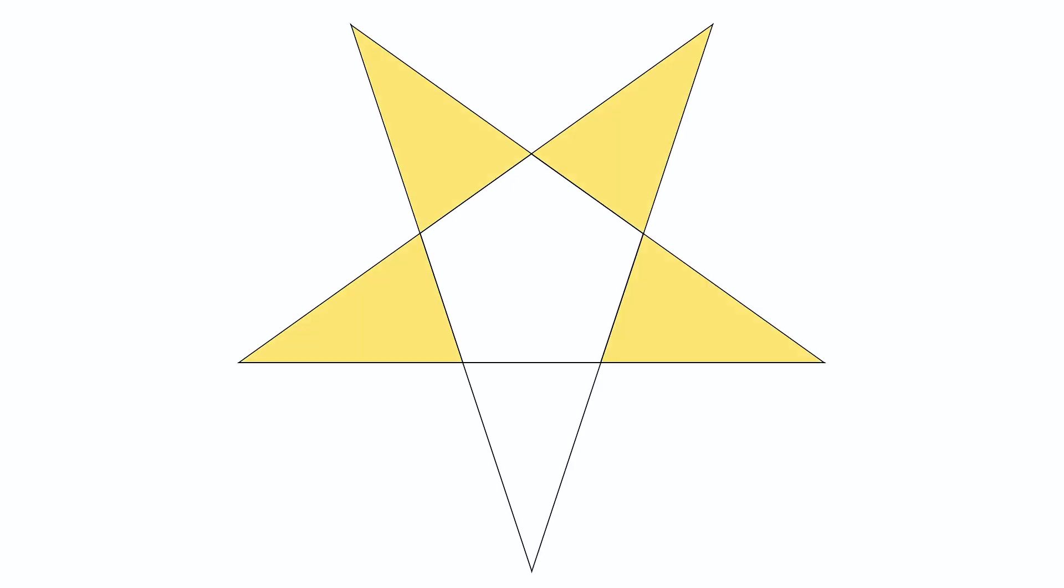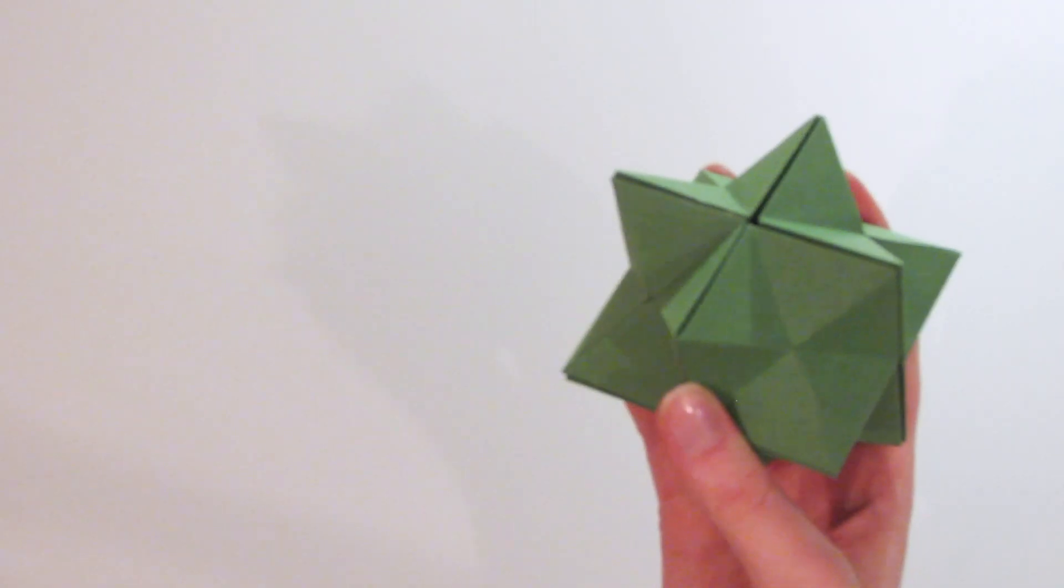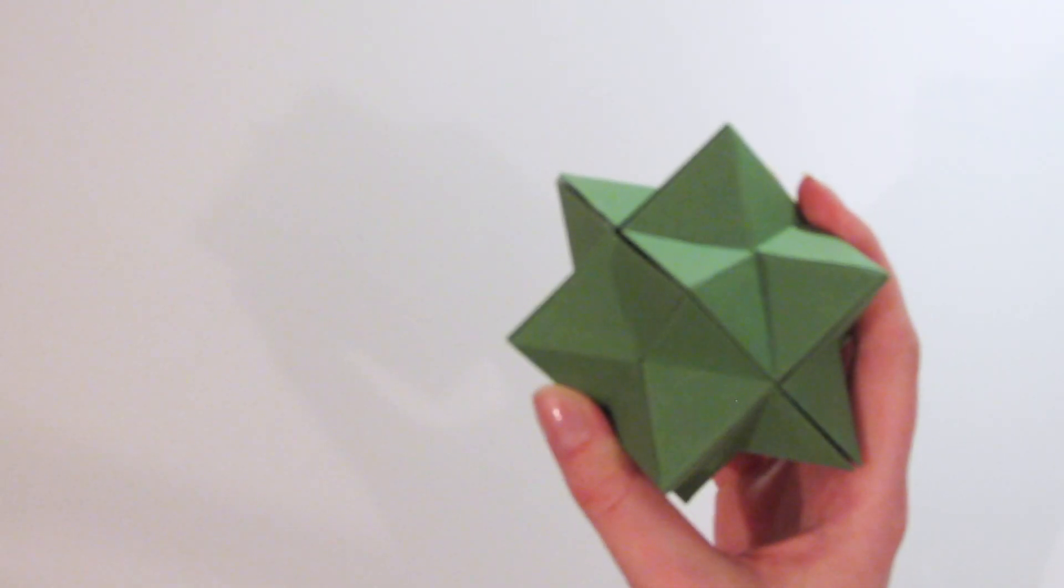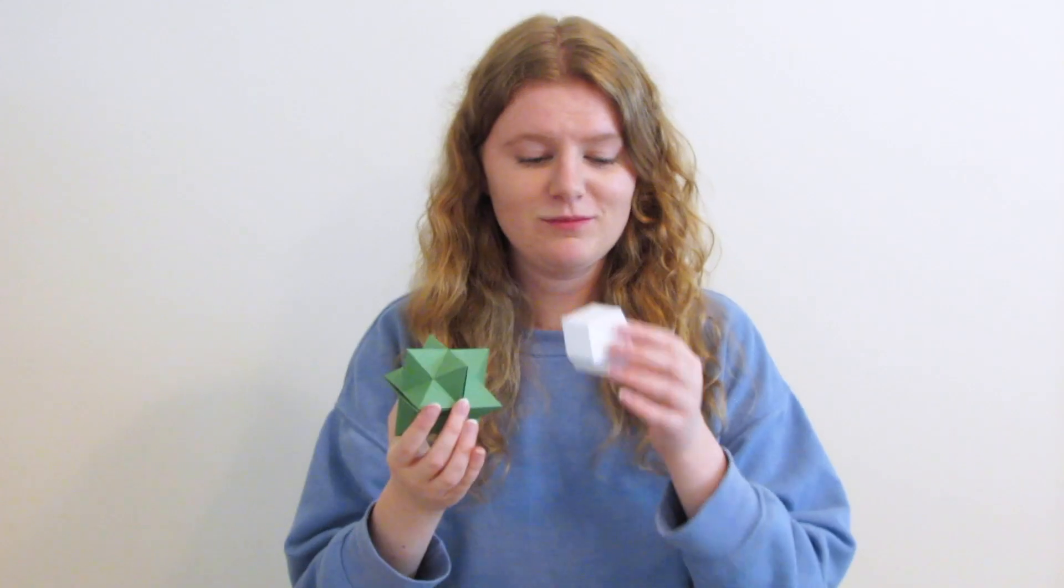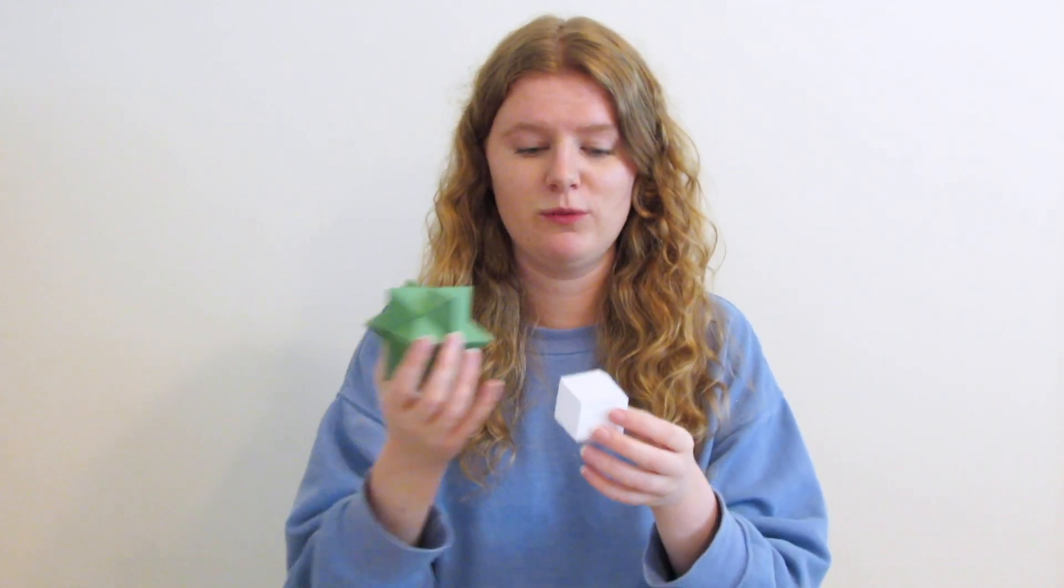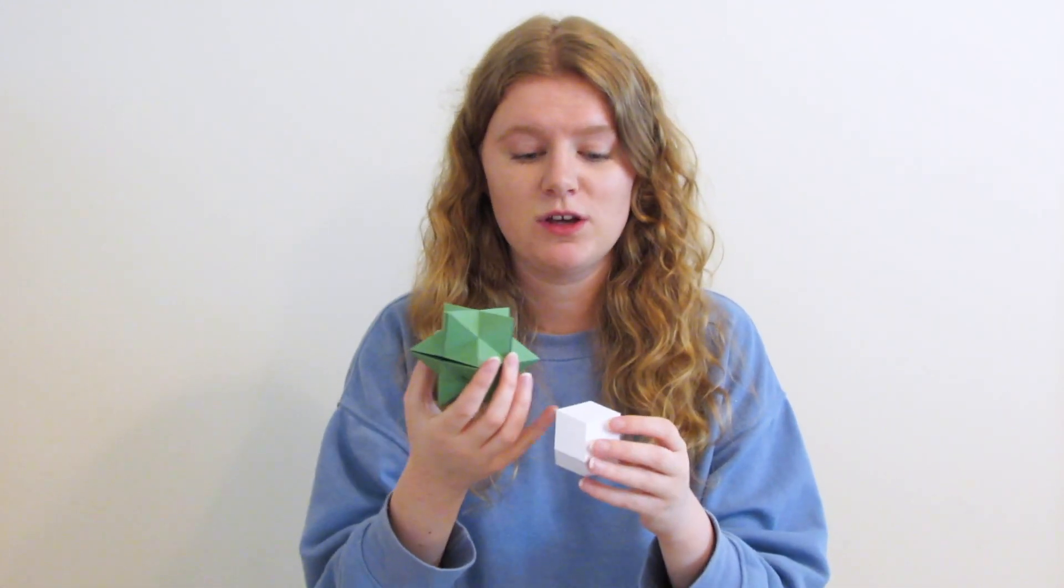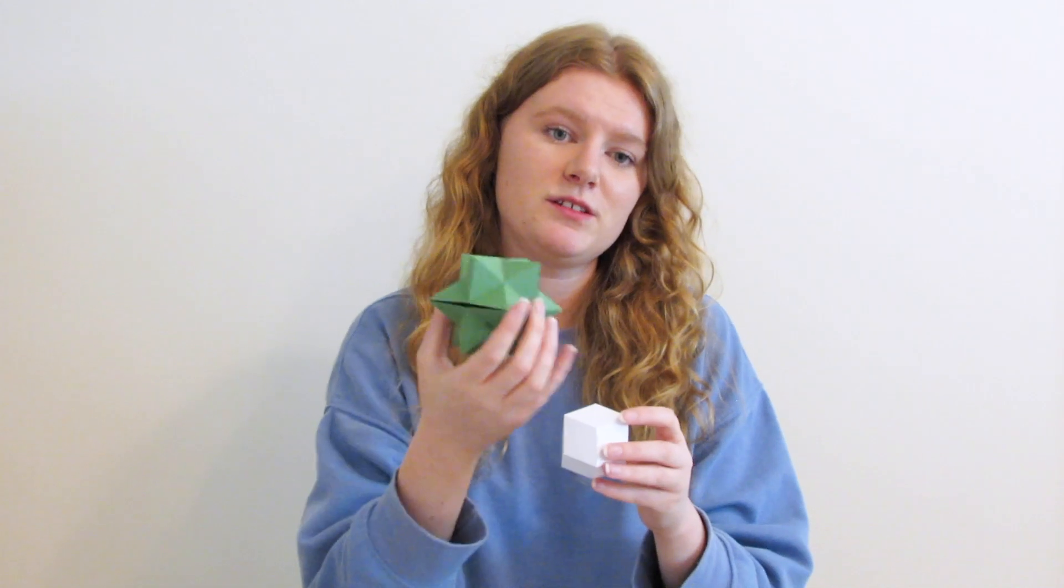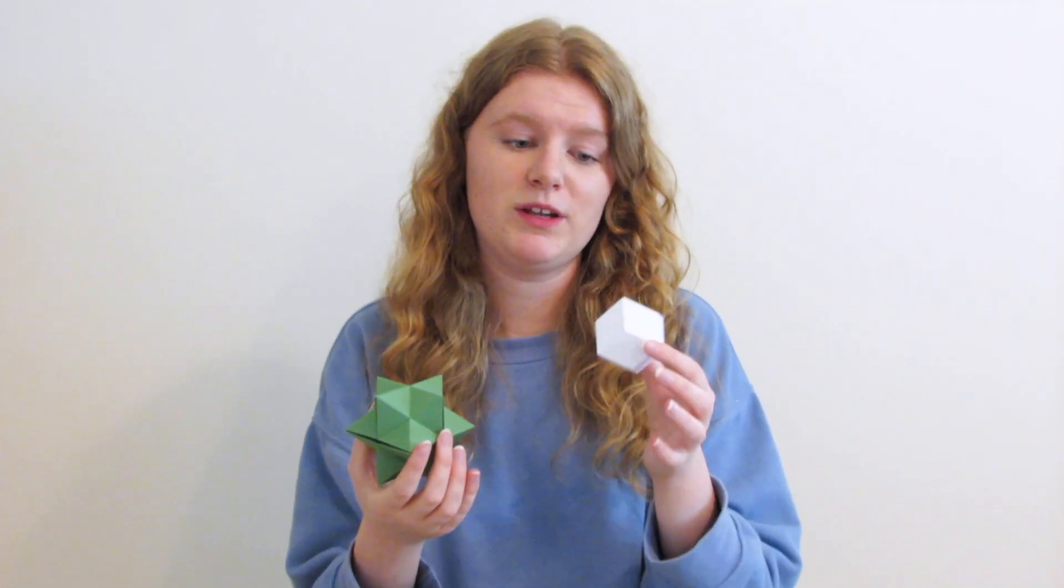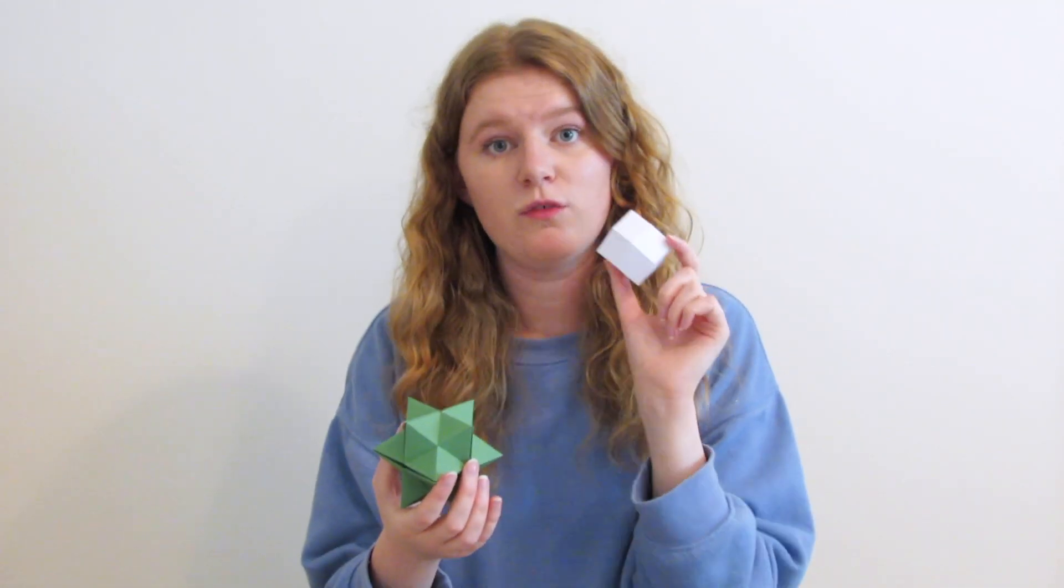Hence the word stellation. So to get the star from the pentagon, we've added the five triangles when we've extended the lines, just as here, we've added 12 little pyramids. And it's the same principle, but instead of extending the lines, we've extended the faces until they meet to form a pyramid on each face of the rhombic dodecahedron.